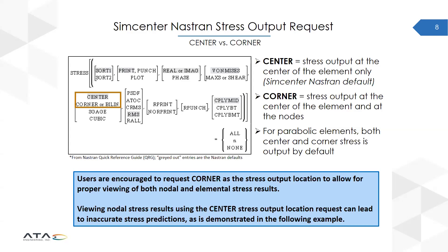One caveat with respect to corner stress is linear triangle elements — even if you request corner stress, Nastran will only give you center stress results. For parabolic elements, both center and corner stress are output by default, so you don't have to be as particular about requesting center versus corner. In general, you're encouraged to use corner stress output for proper viewing of elemental and nodal stress results in the post-processor, because using center stress output when looking at nodal results can lead to inaccurate stress predictions.